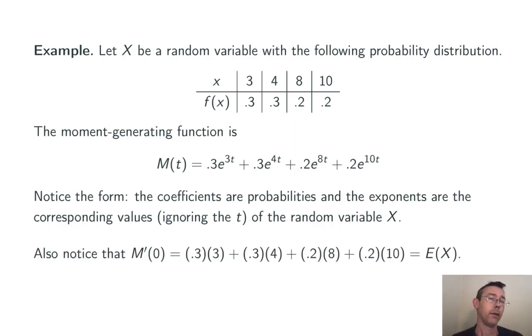Now one other thing to notice here is that if we take the derivative of that and plug in zero we get 0.3 times 3 plus 0.3 times 4 plus 0.2 times 8 plus 0.2 times 10, just the expected value of the random variable. Each one of those terms in M(t) when we differentiate gives us the probability times the value and then of course we add all of those up. So just the expected value.